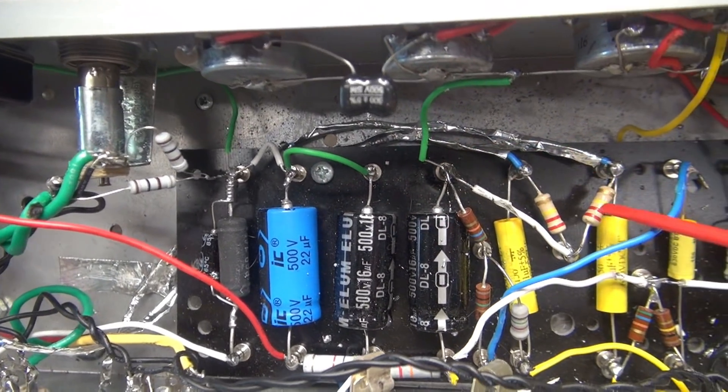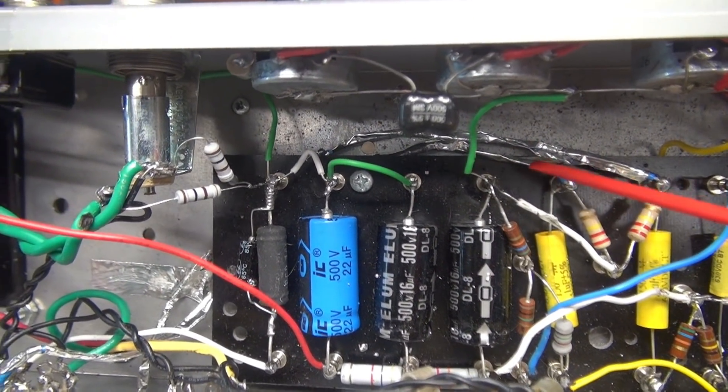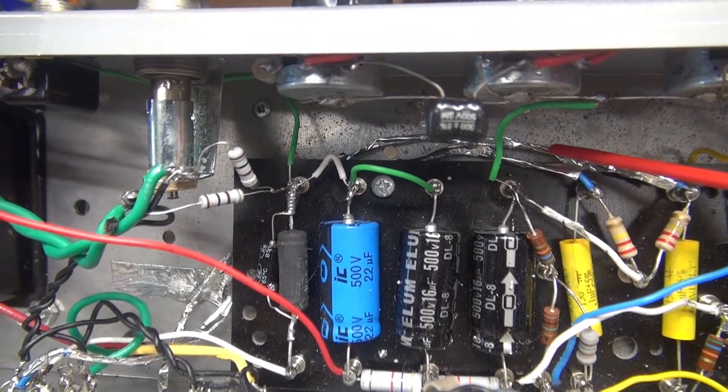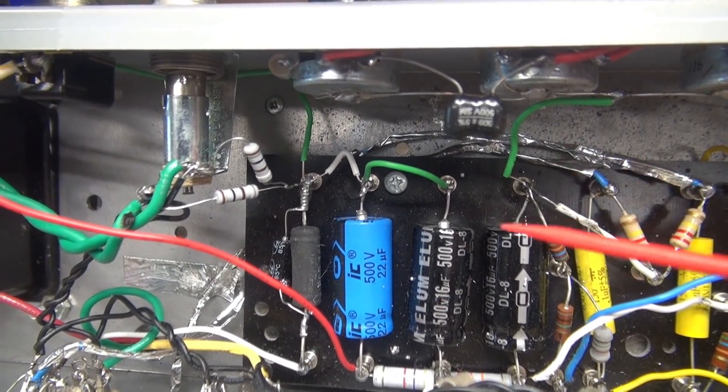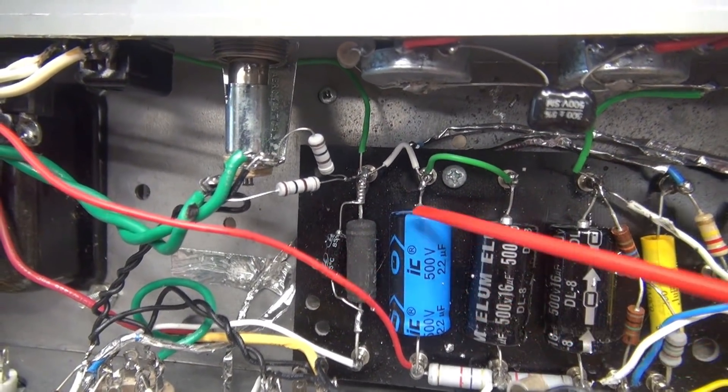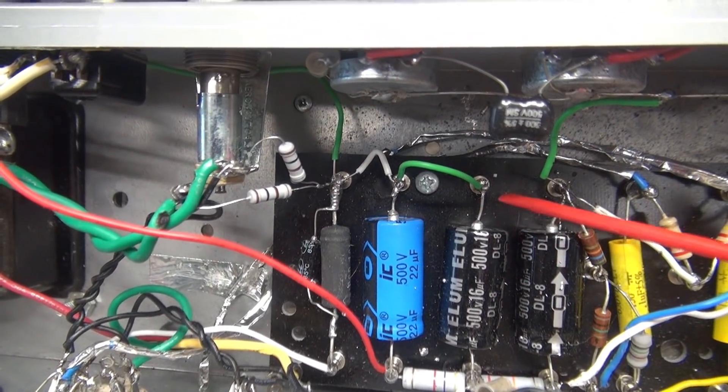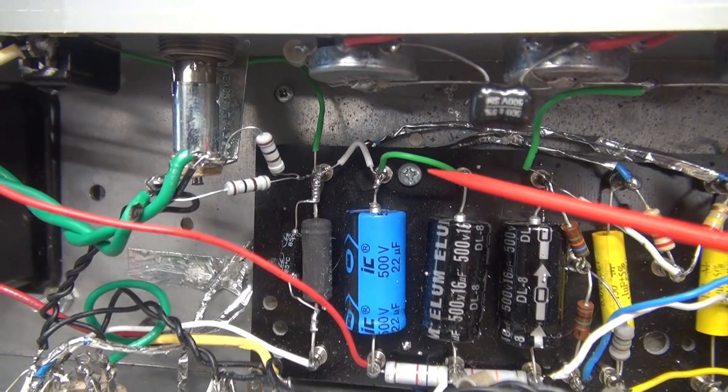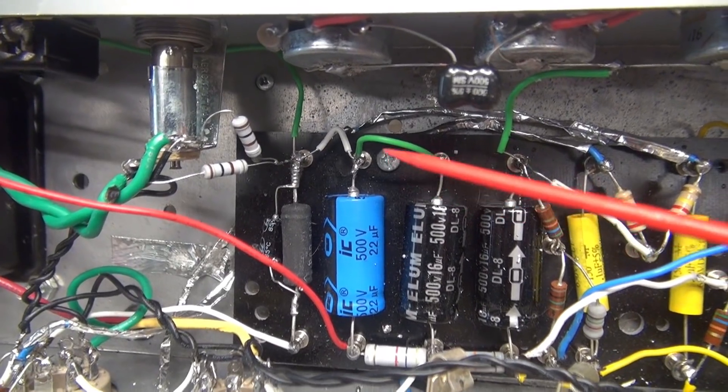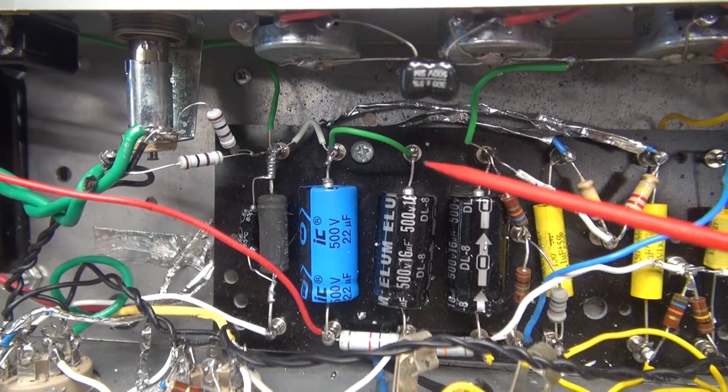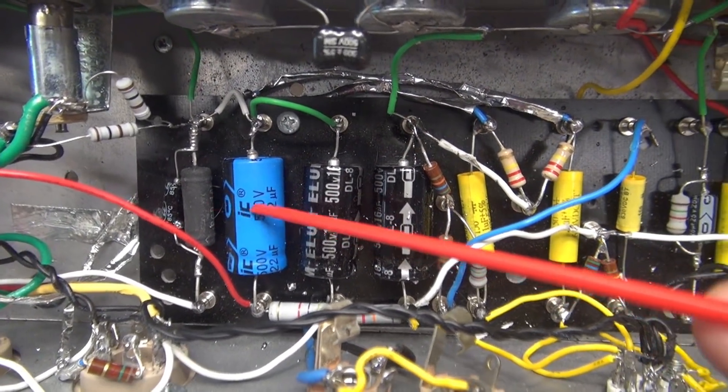That's a little bit alarming to me—that you'd have aluminum foil going underneath this eyelet board. Yes, this is the ground side, so the chances of it contacting the high voltage are probably slim, but it's still of concern. You've got our filter caps here.